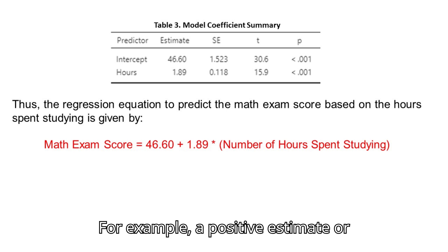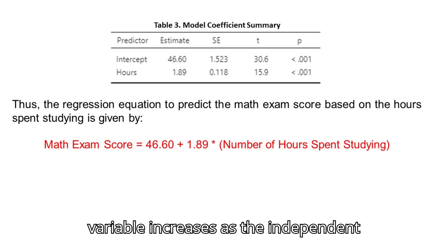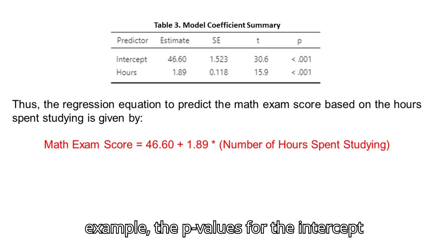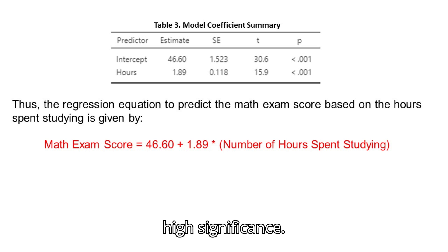For example, a positive estimate or coefficient of 1.89 in the summary translates to a positive slope in the equation, indicating that the dependent variable increases as the independent variable increases. Additionally, the p-value from the summary tells you if the coefficient is statistically significant. So in the example, the p-values for the intercept and hours are less than 1%, indicating high significance.